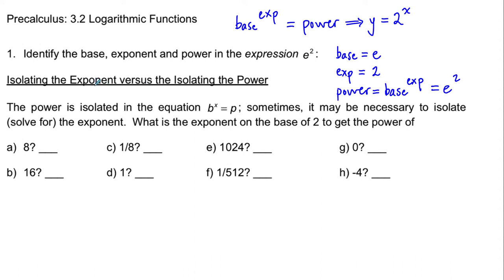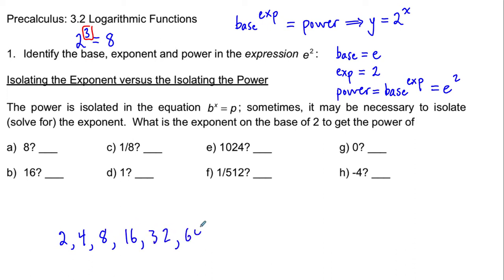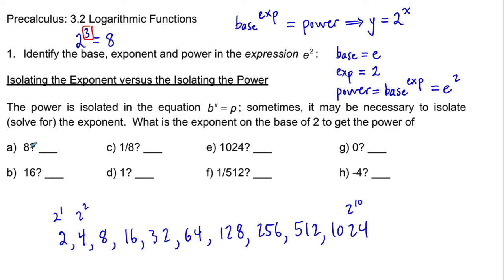We are going to consider the perspective of isolating the exponent rather than just isolating the power. So if I were to give you something like 2 cubed equal to 8, we see that the power of 8 is by itself or isolated. What if we wanted to isolate the exponent? Well, this is what we need logarithms for. Let's look at the exponent that we put on the base of 2 to get each of these powers, and you may want to remind yourself of the perfect powers of 2 sequence — starting at 2 and multiplying by 2.